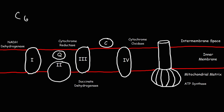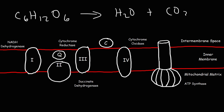Electrons will travel from atoms that are less electronegative to atoms that are very electronegative. In the beginning, electrons were located in glucose, attached to carbon atoms. In the end, those electrons go to oxygen to make water and carbon dioxide. As electrons flow from carbon to oxygen, energy is released. Carbon has an electronegativity of about 2.5, while oxygen's is 3.5. By taking electrons from a less electronegative atom to a more electronegative one, we can extract energy from that process.